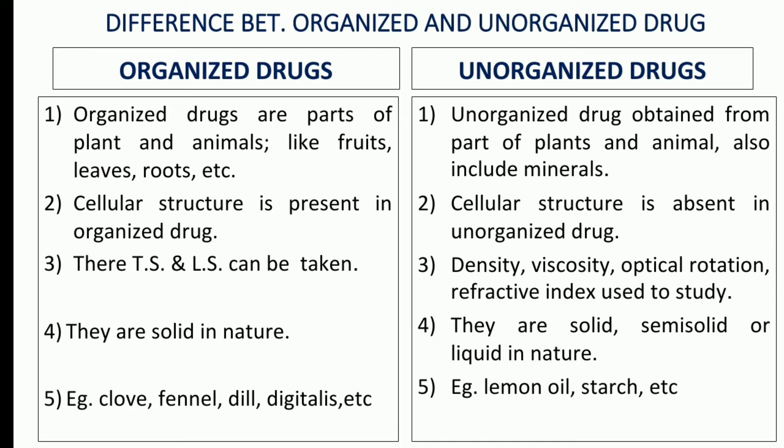Organized drugs are solid in nature, whereas unorganized drugs can be solid, semi-solid, and liquid in nature. Organized drugs have examples such as clove and fennel, and unorganized drugs have examples such as lemon oil and starch.